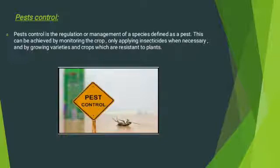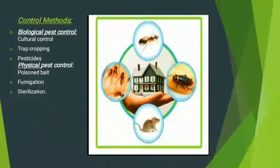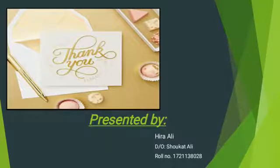Pest control is the regulation or management of species defined as pests. This can be achieved by monitoring crops, applying insecticides only when necessary, and by growing varieties resistant to pests. Control methods include biological control methods and physical pest control, which consists of fumigation and sterilization. This concludes the presentation on basic concepts in economic zoology.